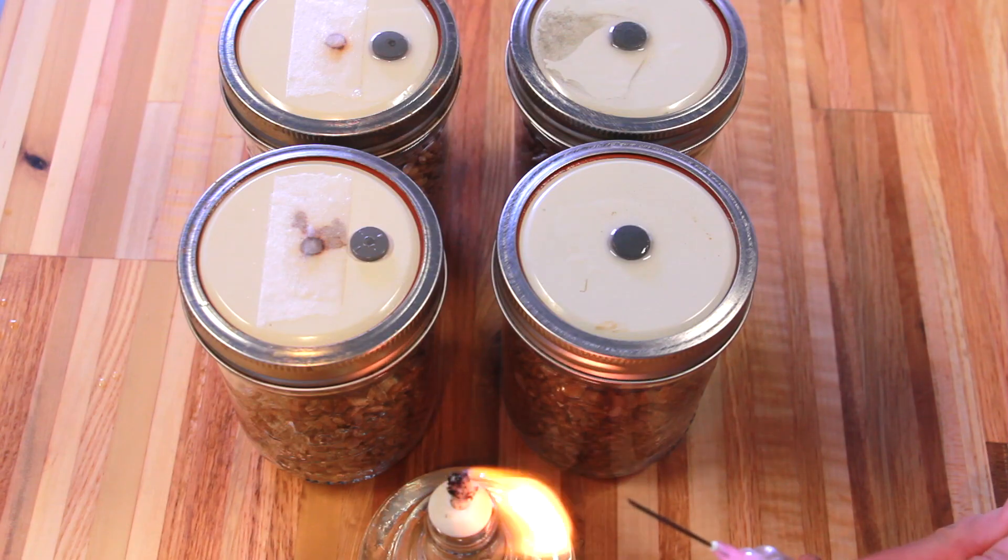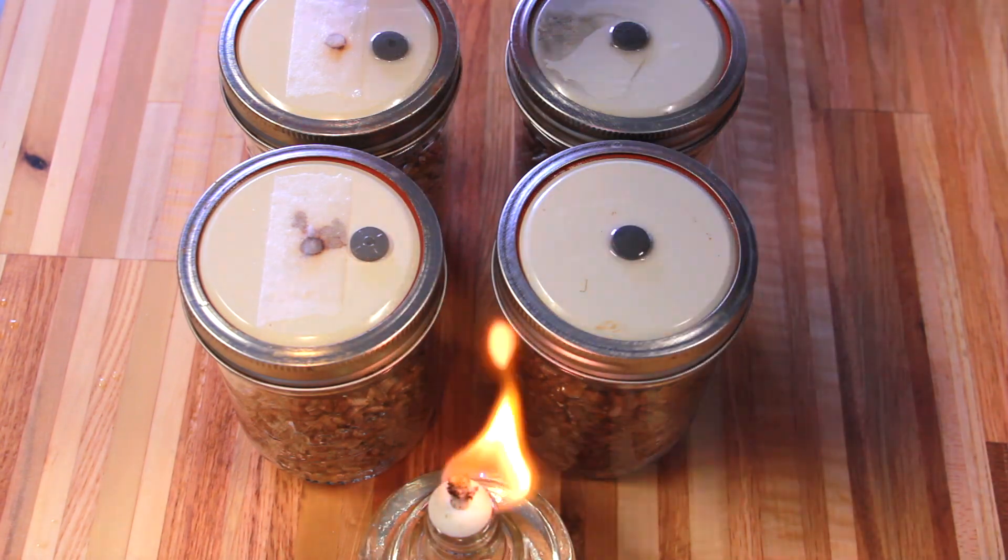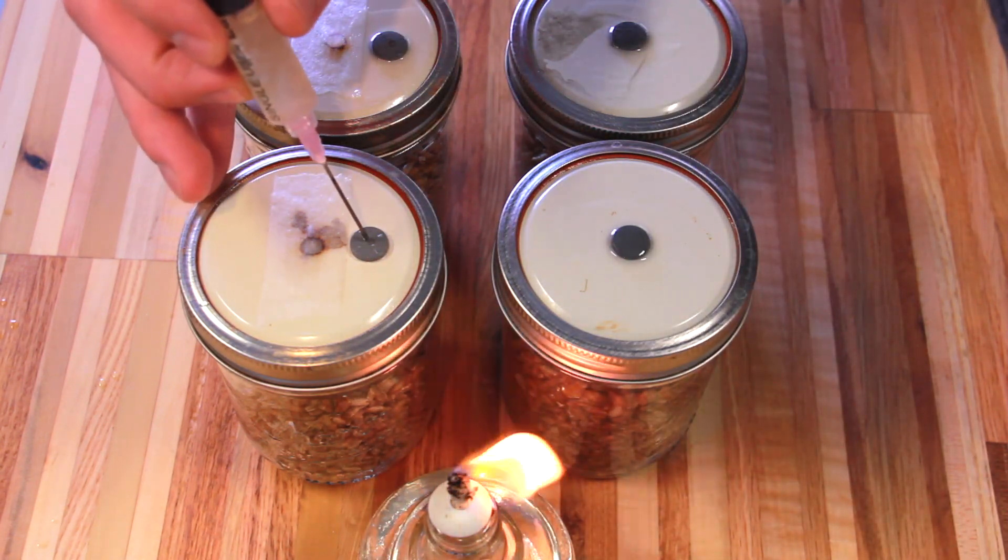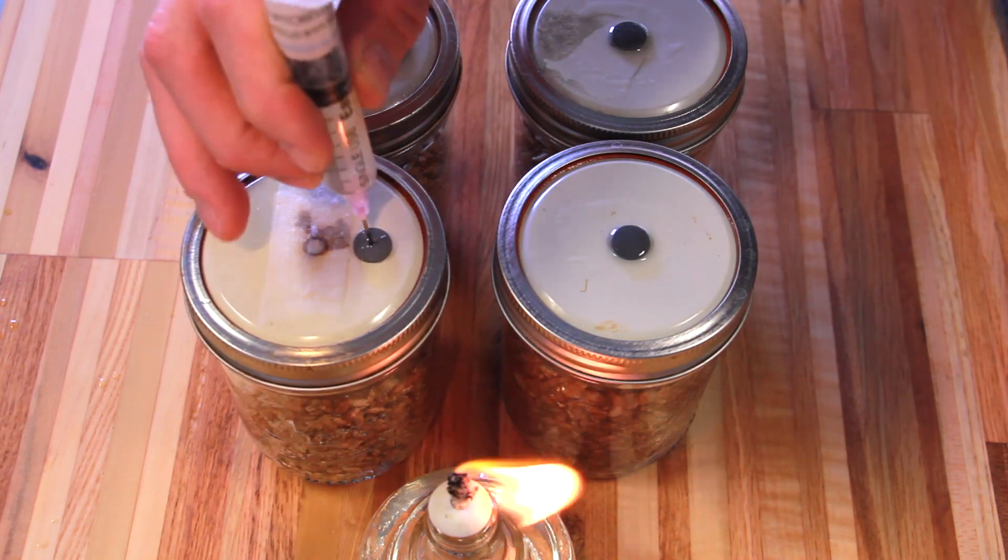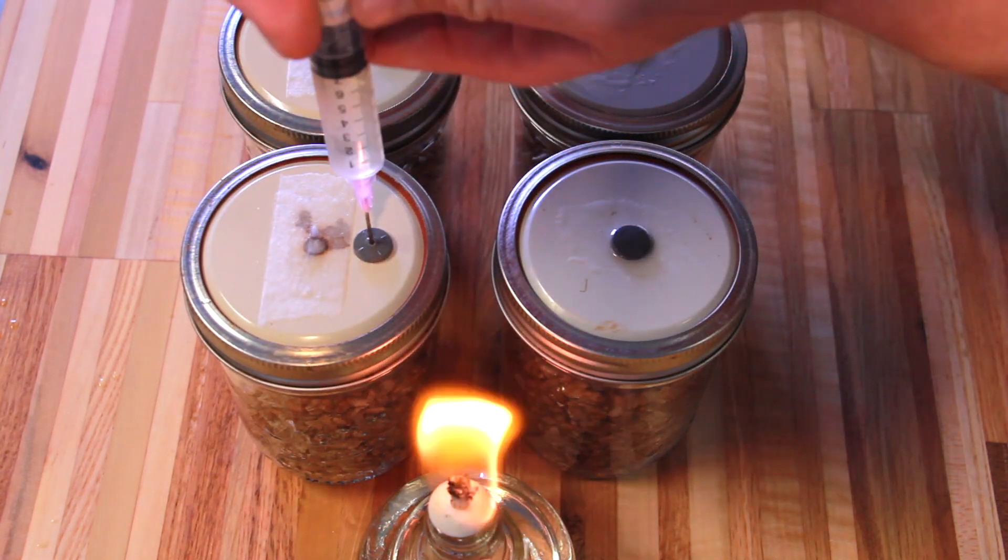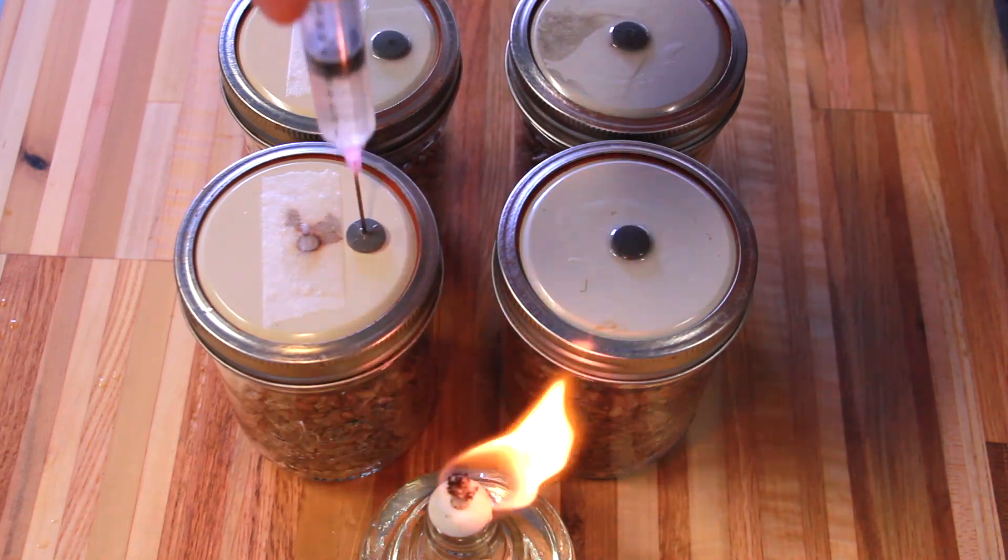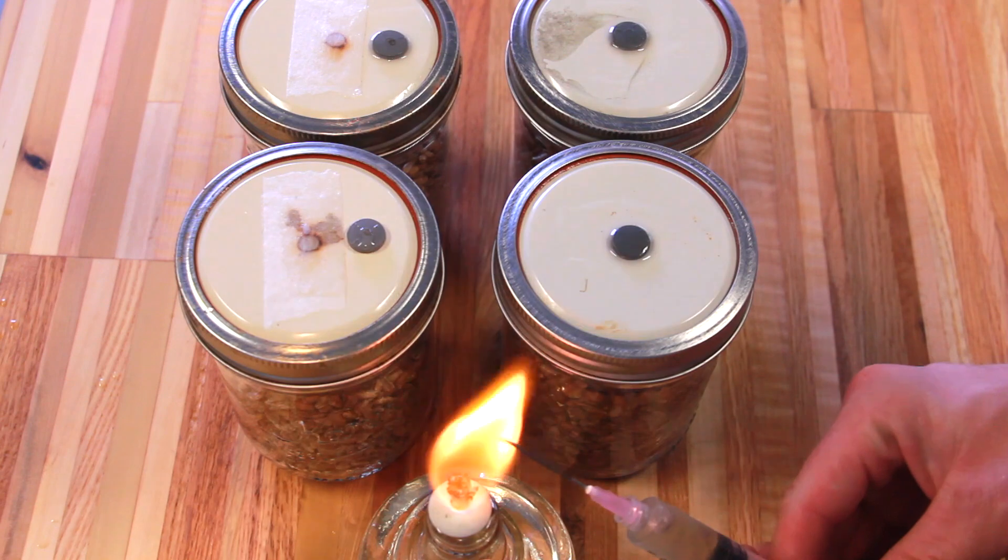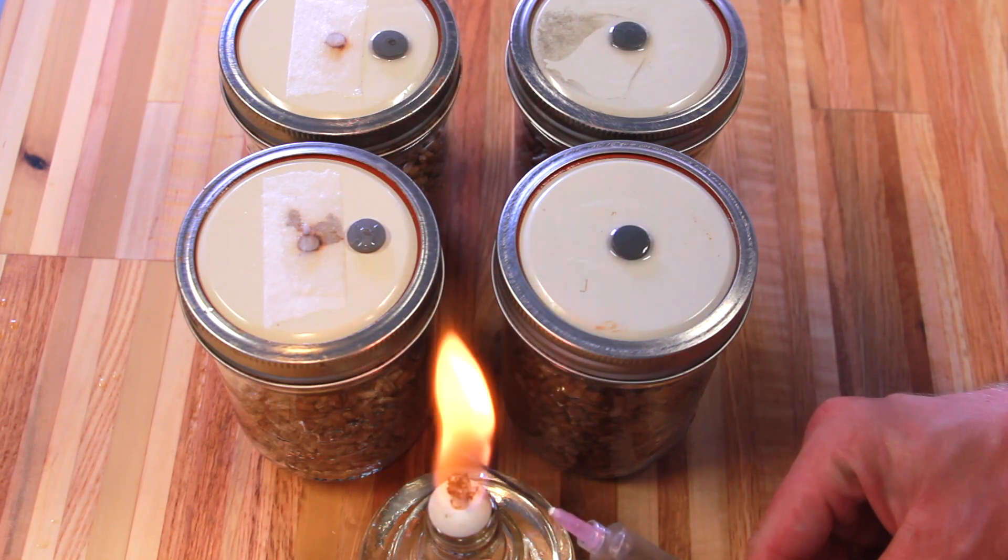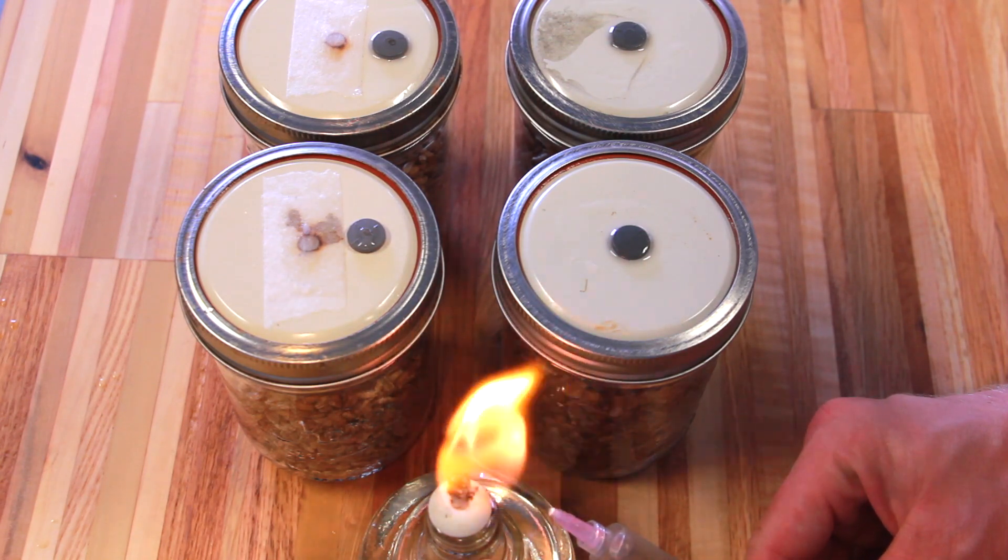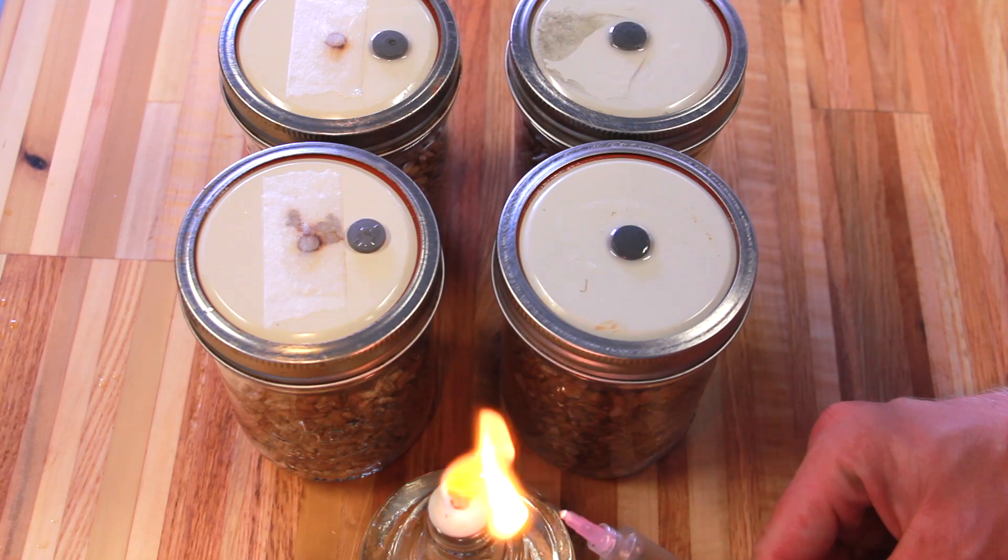After the needle has been completely heated I spray just a little spurt of the culture through it and that rapidly cools down the needle. That way you're not melting your injection ports when you go to inject. Press the needle into the injection port and I put about two to three cc's in each of mine. I sterilize the needle between every jar and this helps prevent cross-contamination.